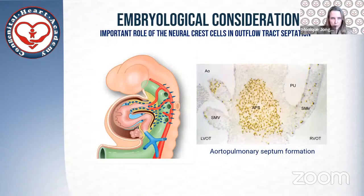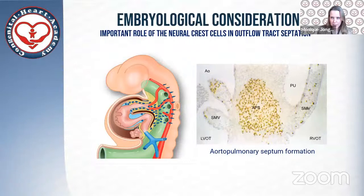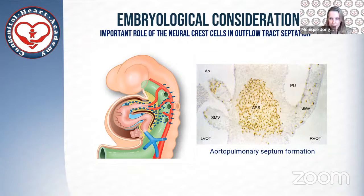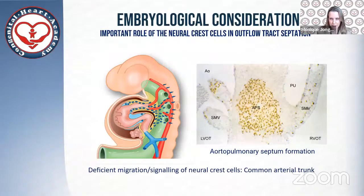The embryological structure responsible for proper separation of the outflow tract is the so-called aortopulmonary septum, which is formed by a contribution of neural crest cells — indicated here in blue and in the microscopic section in brown. These neural crest cells migrate to the heart from the crest of the neural tube during early development. A deficient migration of those neural crest cells has been associated with common arterial trunk in many animal studies.